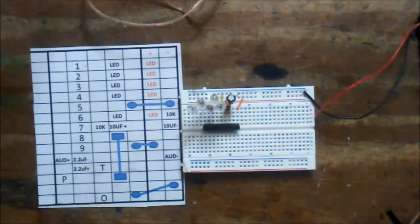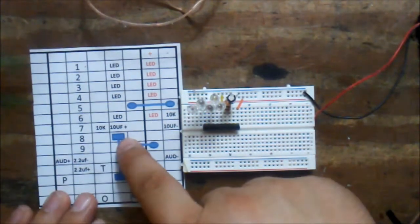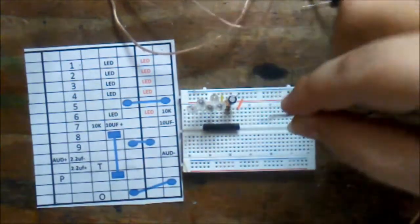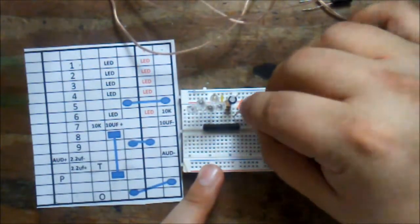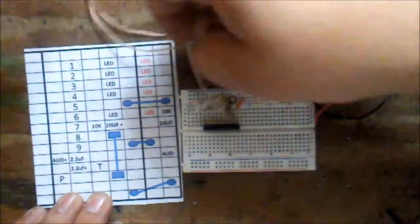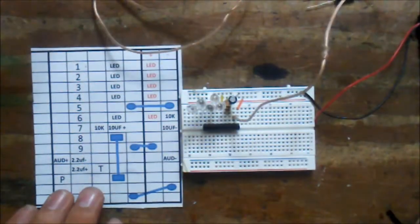Row eight has a connecting from eight to the P, the center one. So, we take the center lead of our potentiometer and put it right there in row eight. Now, row nine is positive, we already have that.